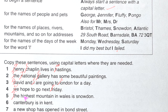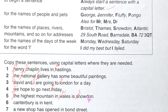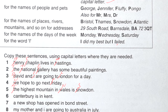'the highest mountain in wells is snow down.' 'Wells' — this is a place's name, so 'W' will be capital. 'Snowdon' is a mountain name, so it should also be capital. We had found in the rules: mountains and so on — addresses — so it should be capital.